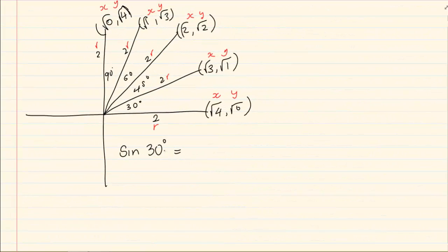So I look at the 30 degree line and the value of Y is root of 1. So I got root of 1 over R which is 2. So sin of 30 is equal to 1 over 2.